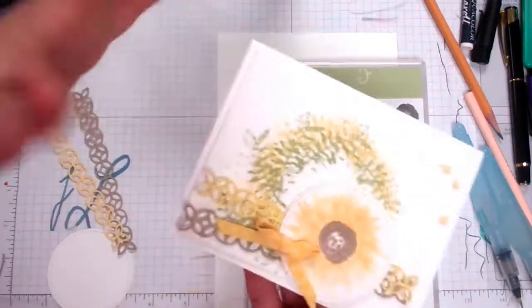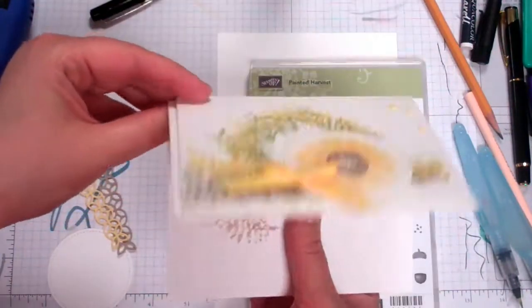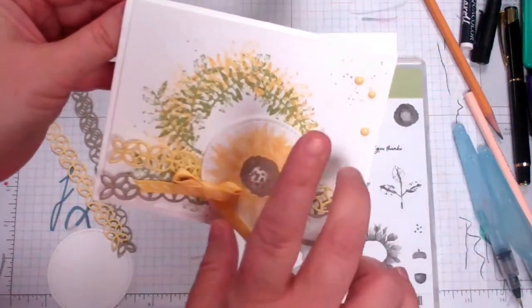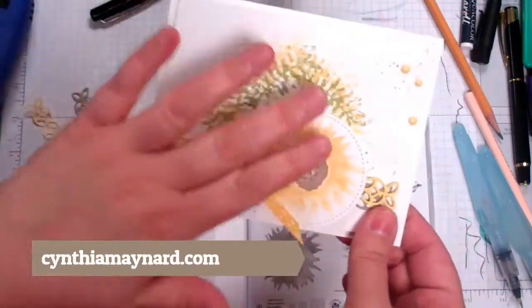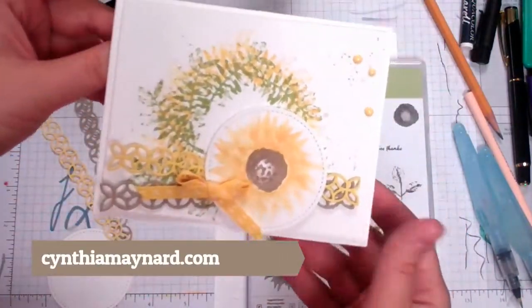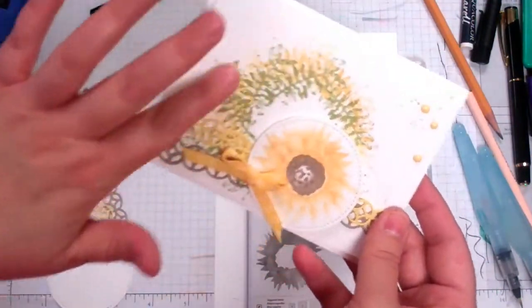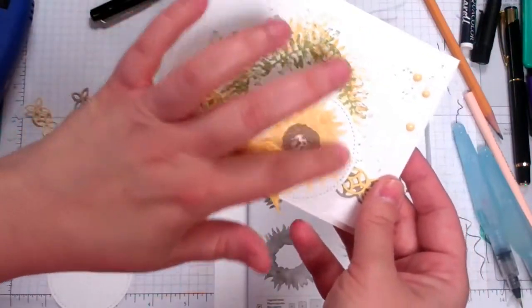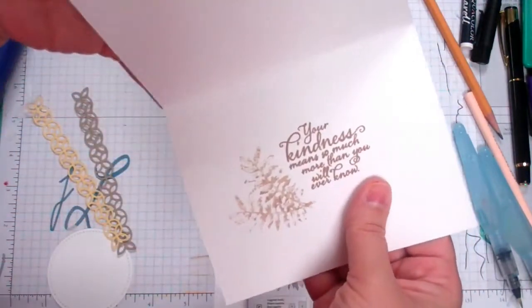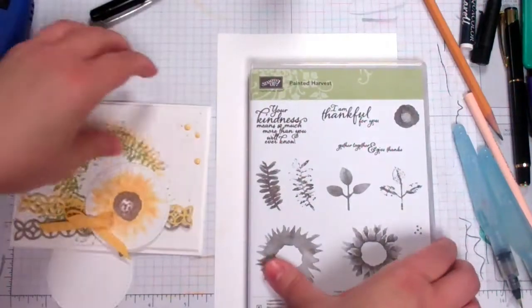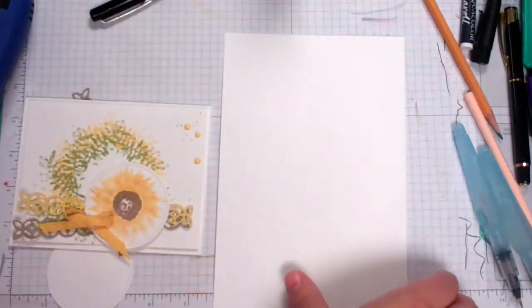I have another card from my card class that's still available on my website at CynthiaMaynard.com. This is the card we're making, a nice white on white with just a little bit of color, a little bit of texture, and super easy to make.